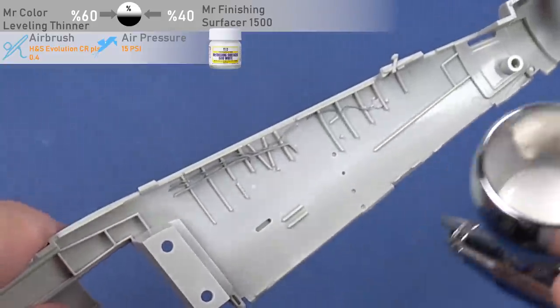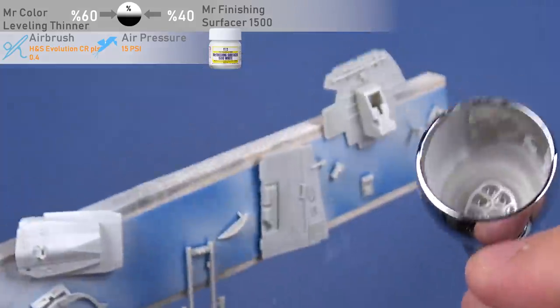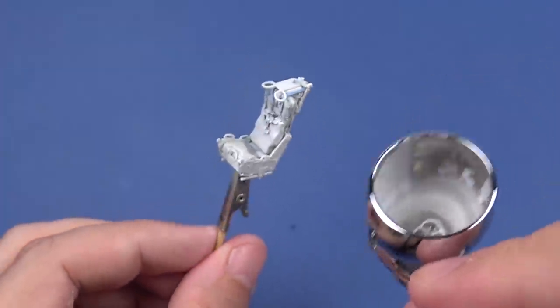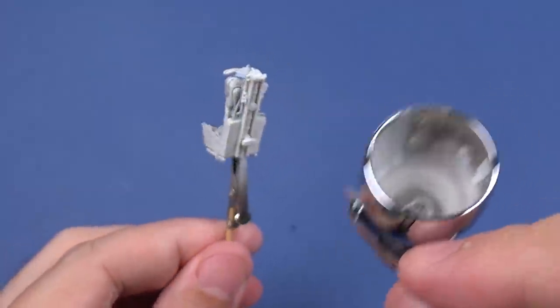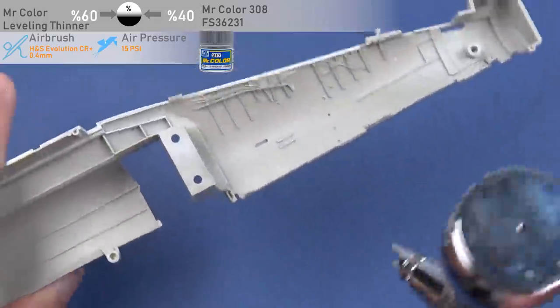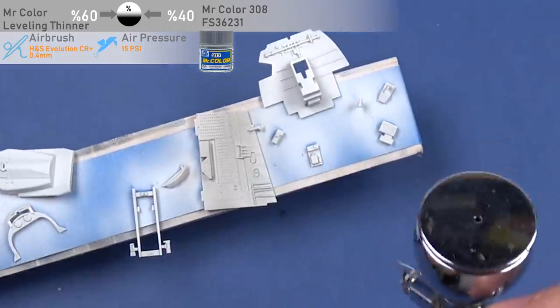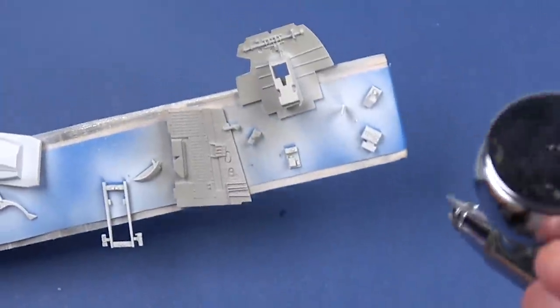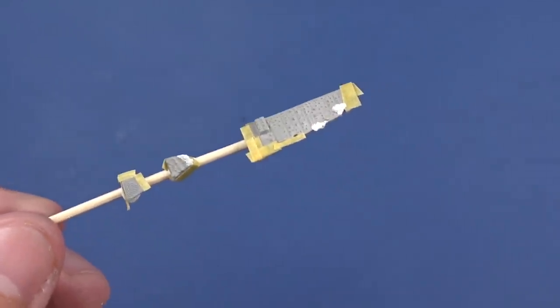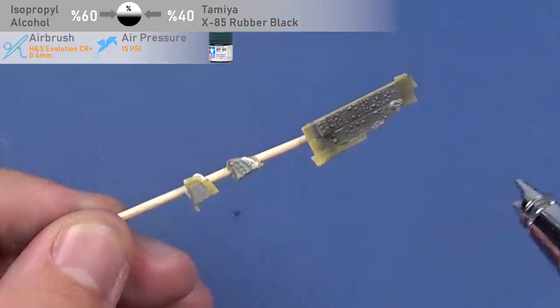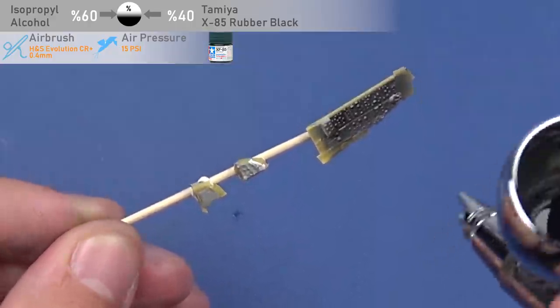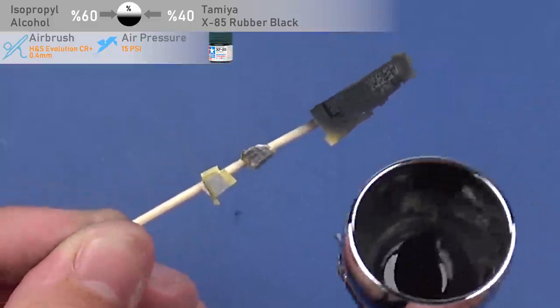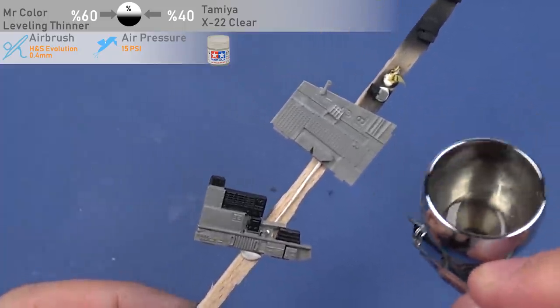Finally, I can start to paint. Primer first. And the base color. After masking these areas, now I can paint them. The first gloss varnish layer before applying the detail paint with brush.